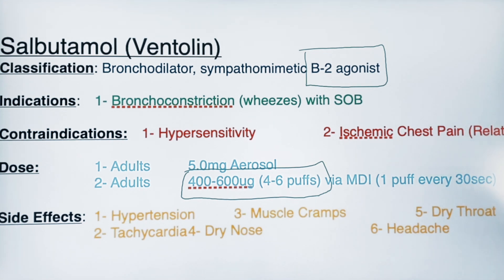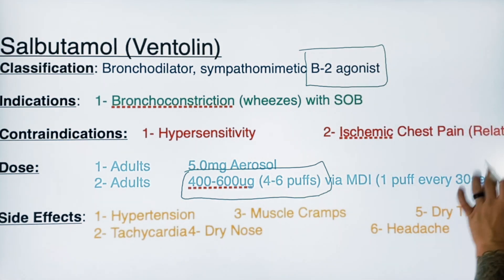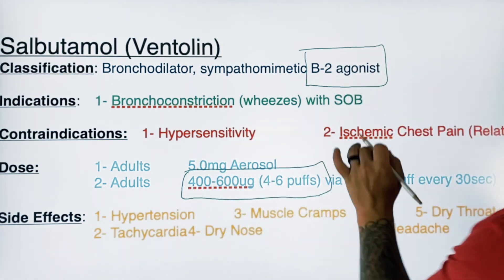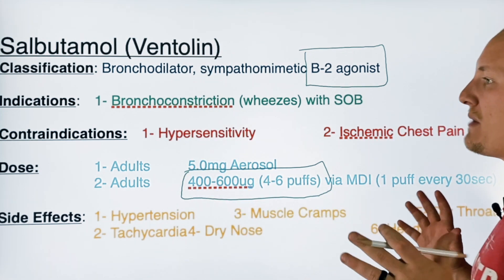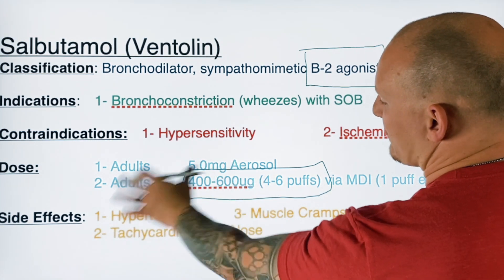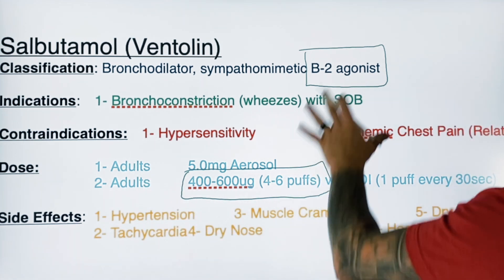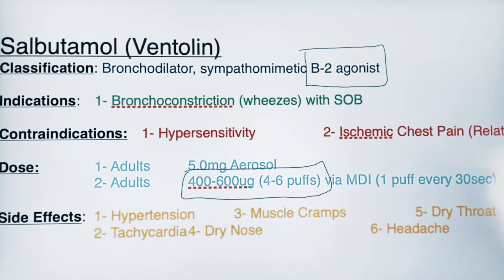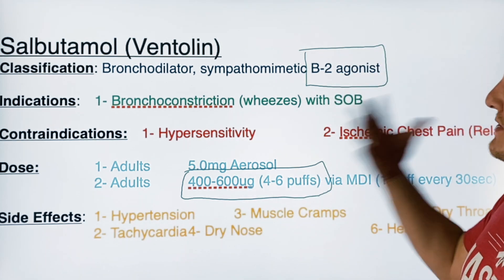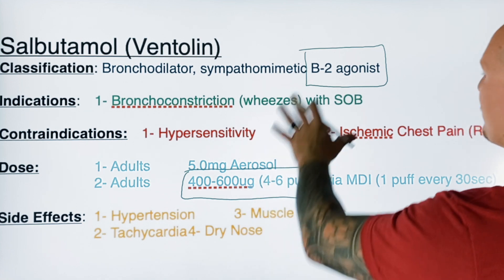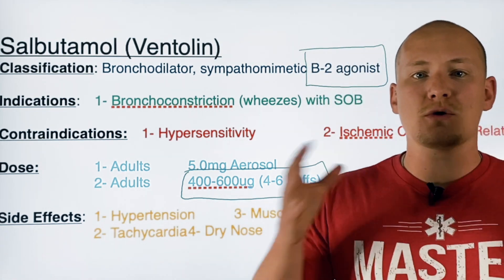Side effects include hypertension, muscle cramps, dry throat, tachycardia, dry nose, and headaches. Remember this is a sympathomimetic, so the more we use it, the more we create a sympathetic response. You'll see alpha-1 effects like hypertension and vasoconstriction, and tachycardia from beta-1 agonism as well. With repeated doses, salbutamol stops being selective to just beta-2 and starts creeping into beta-1 and alpha-1 activity.